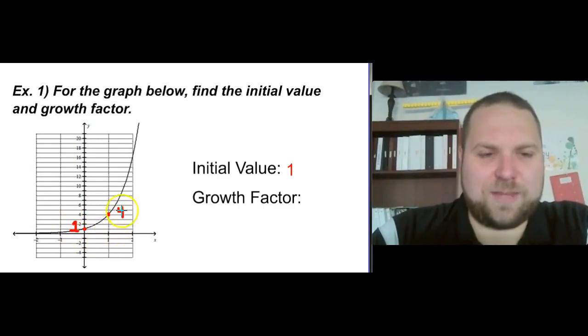the y-value of my second point, and the second point on a graph is always going to be the one that's furthest to the right. So I take my second number divided by my first number, and 4 divided by 1 is, of course, 4. And so my growth factor is going to be 4.